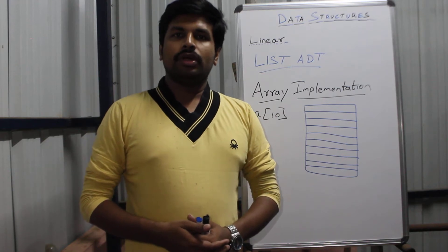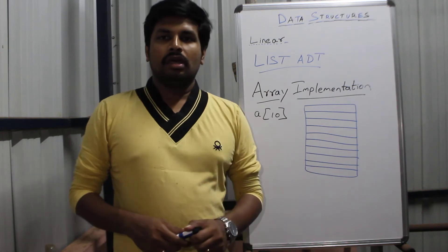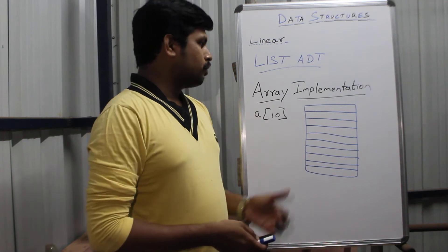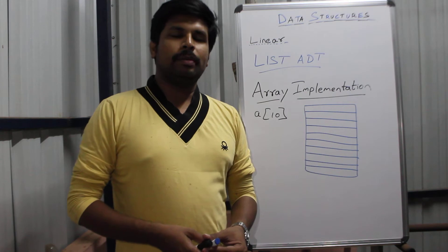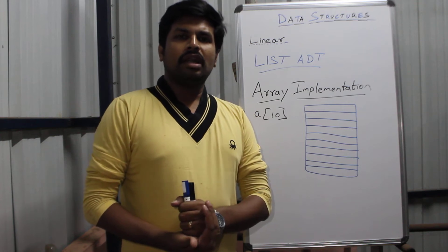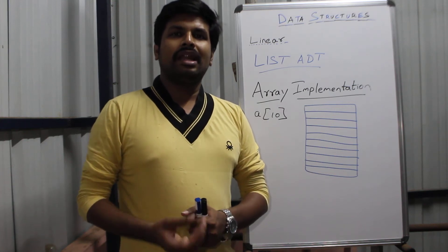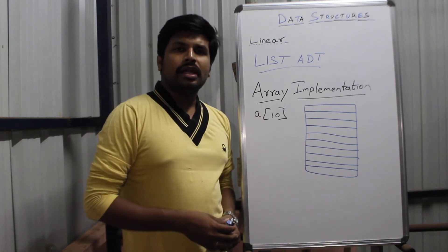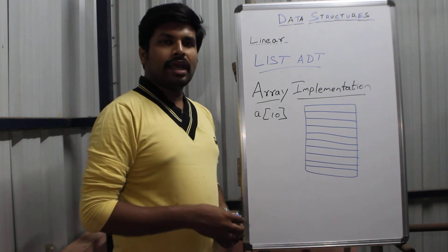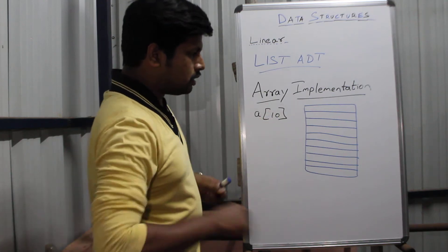In this tutorial, we are going to see about array implementation of List ADT in linear data structures — the first implementation of the first ADT in the first type of data structures we have seen so far. For array implementation, we first need to know what an array is. An array is nothing but a collection of data with similar data types. For example, an integer array consists of a collection of integer elements. So if we have an array A of size 10, where A is the name and 10 is the size.